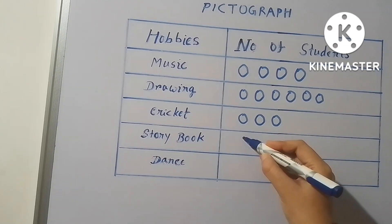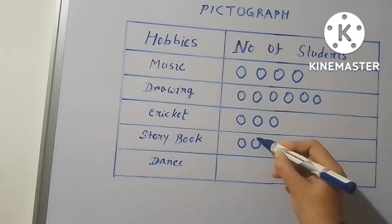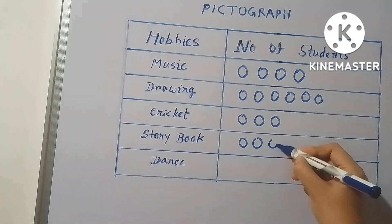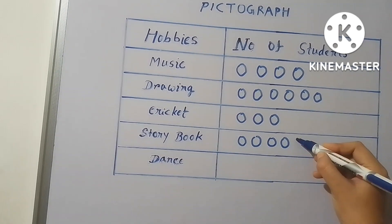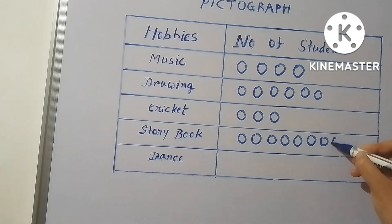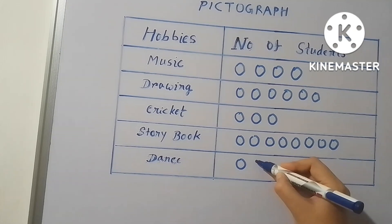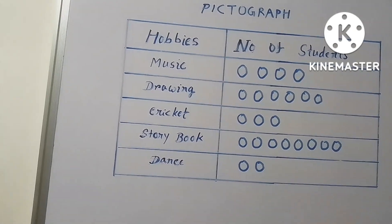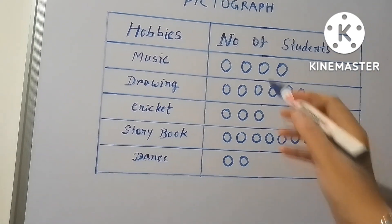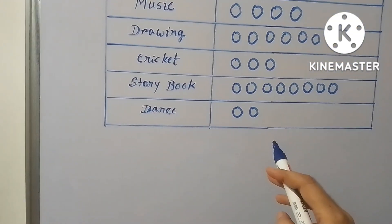You can color the images or the circles here. At last we have to give the keys about the circles, which means each circle denotes how many students. That has to be noted at the last end of the pictorial representation. Now I am going to write the keys against each of the circles.